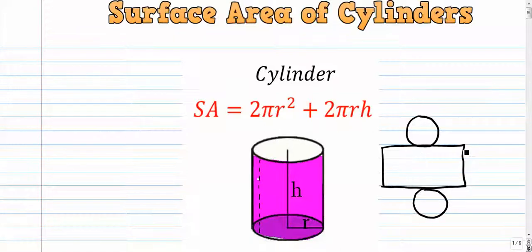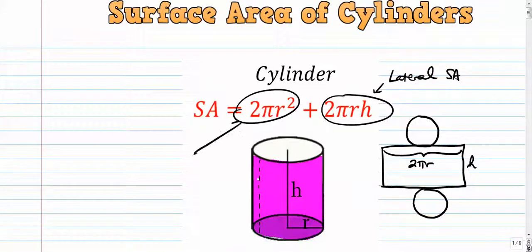So a cylinder actually breaks up into a net that has two circles and a rectangle. That's all the purple part is, it's a rectangle. And that rectangle is h units this way, and this would be the circumference of the circle. Circumference is 2 pi r. So to find the area of a rectangle, you take length times width, which is 2 pi r times h. That's where this comes from. So that would be the lateral or the side surface area, and this component is the top and the bottom circles. Cool, so let's try a few.